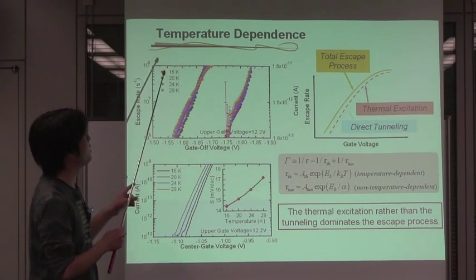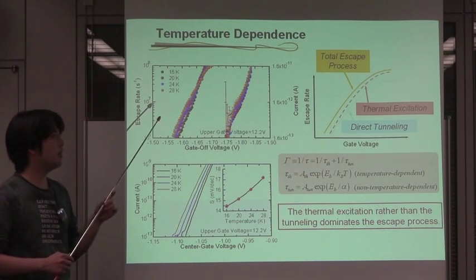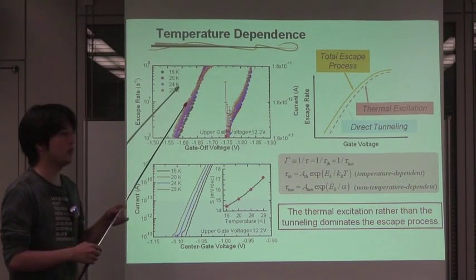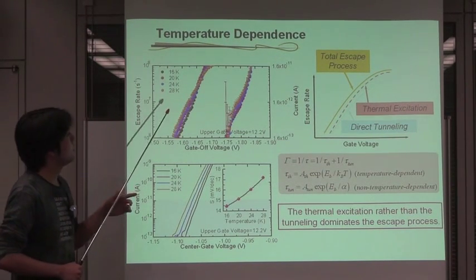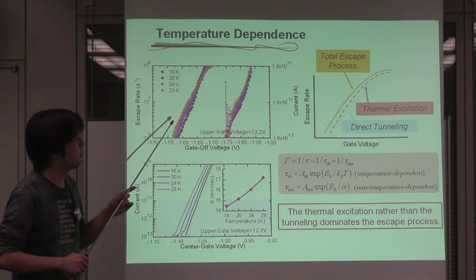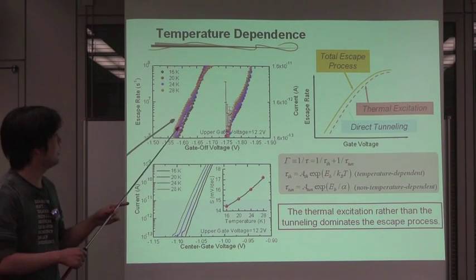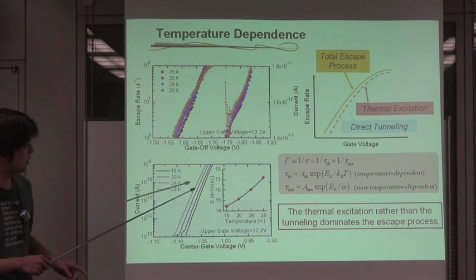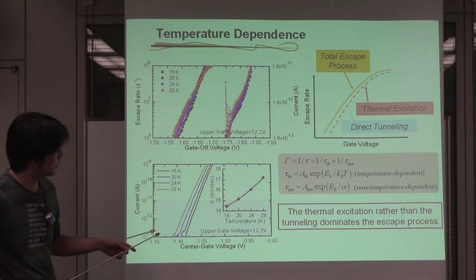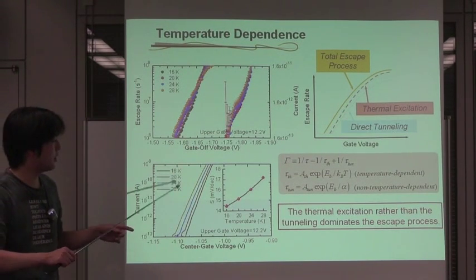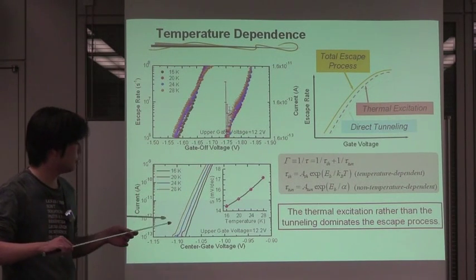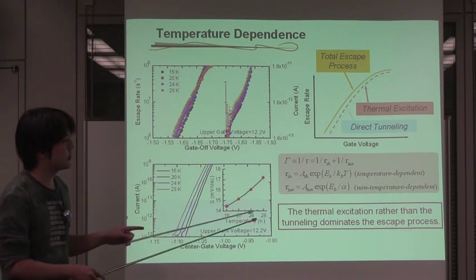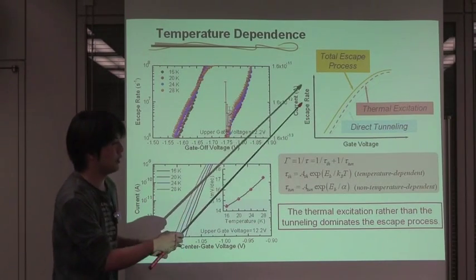This is because the latter electrons experience additional energy by Coulomb-gap energy of several meV. Next, we investigate the temperature dependence of the escape rate, which is the inverse of the escape time, in the temperature range from 16K to 28K. As you can see, as the temperature increases, the slopes of the escape rate against the gate-off voltage decrease. In comparison to the lower figure, this behavior is qualitatively consistent with the temperature-dependent current characteristic in the subthreshold regime of the MOSFET. At this temperature, we think the thermal excitation, rather than the tunneling, dominates the escape process.